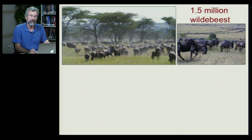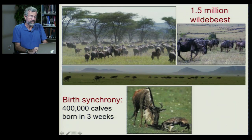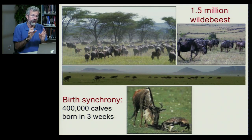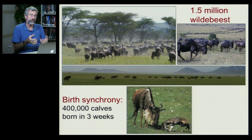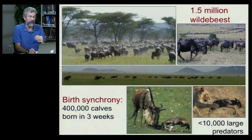Many animals rely on the dilution effect to reduce their individual risk of being chosen by predators. One of the most famous examples are the wildebeest of the Serengeti, with one and a half million individuals. About 400,000 females give birth within a single three-week window. The calves are very vulnerable the first few days after birth, but it only takes three or four days to gather strength and be as difficult to catch as an adult. There are tens of thousands of newborns on any given day — far more babies than there are lions to eat them — so most escape predation. They're swamping the predators: a classic case of the dilution effect.